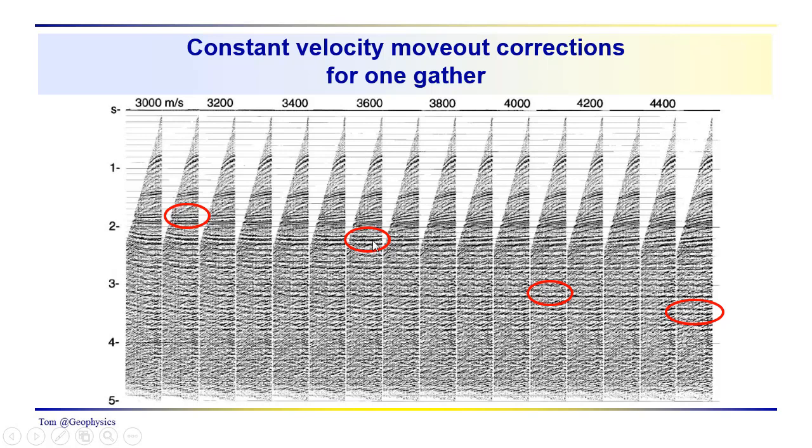And then the interpreter is going to build a velocity function, which they're going to use in order to correct, in order to apply a move out before stacking all these traces.